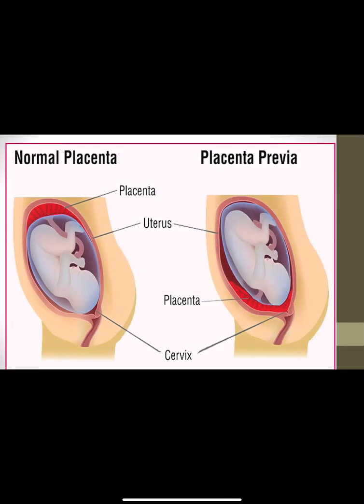This photo represents normal placenta and placenta previa. The uterus is divided into upper uterine segment and lower uterine segment. In the first photo, the placenta is in the upper uterine segment in the fundal region. In the other photo, the placenta is in the lower uterine segment, below the presenting part of the baby — and we call it placenta previa.